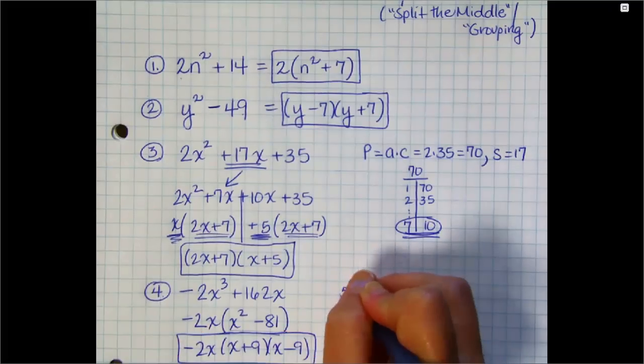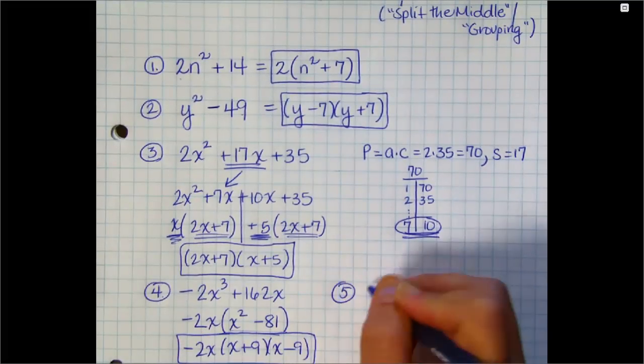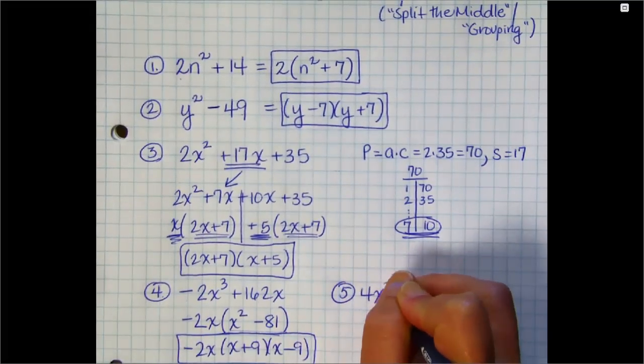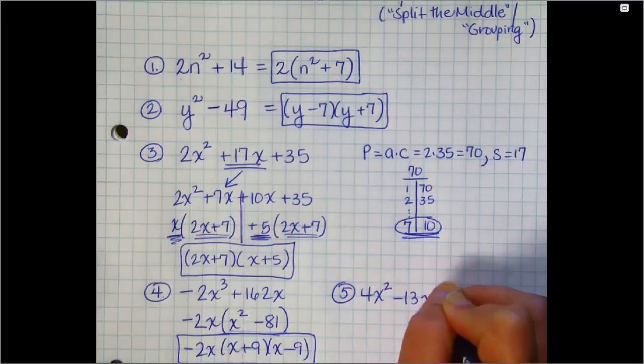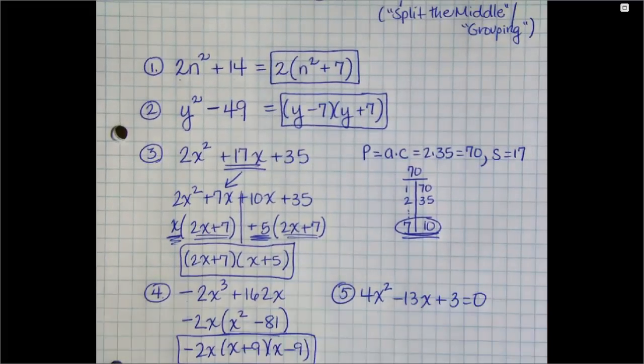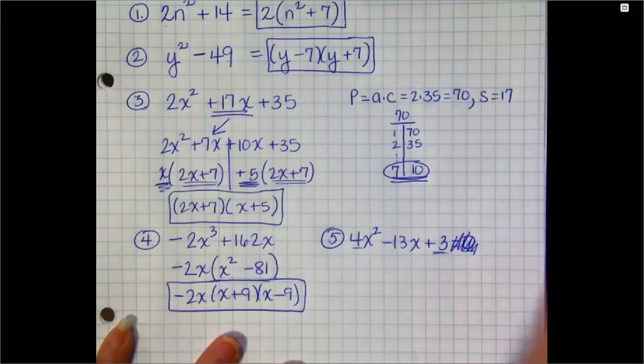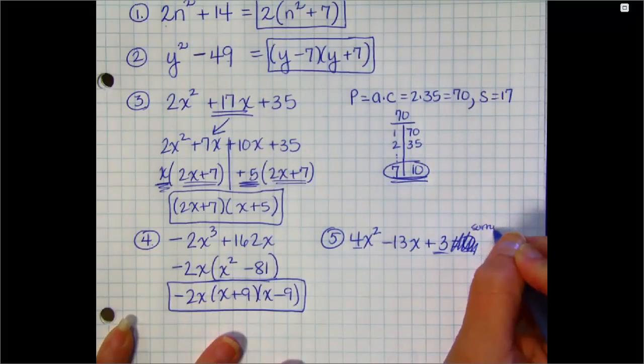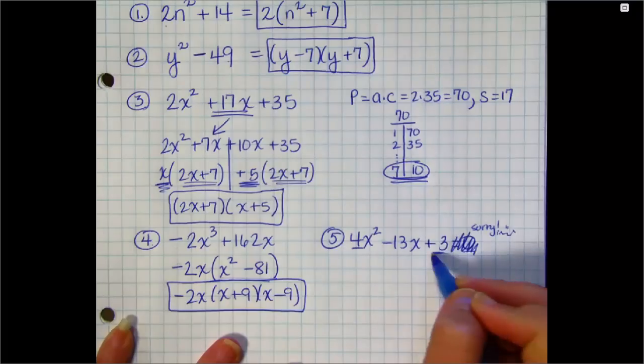For our last example, we'll factor 4x squared minus 13x plus 3. Sorry about that equals 0 at the end. We're not solving. We're just going to factor, so let me cross that out. So the product I need is 4 times 3, which is 12. A times C is your product. 4 times 3 is 12.